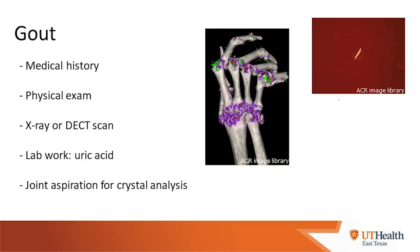In terms of diagnosing gout, we talk to patients and get a good history and perform a thorough physical exam. We can use x-ray or a dual energy CT scan to look for evidence of gout. The green in that picture depicts uric acid crystals, which are the problem in gout. We can also get a uric acid level in the blood to determine how severe the gout is and if it's well controlled. The gold standard for diagnosing gout is to take fluid from the joint and look for crystals under the microscope.